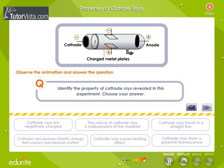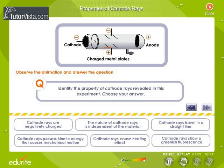You can see the deflection of the cathode rays towards the positive plate. Which property of the cathode rays does this indicate? Choose your answer.